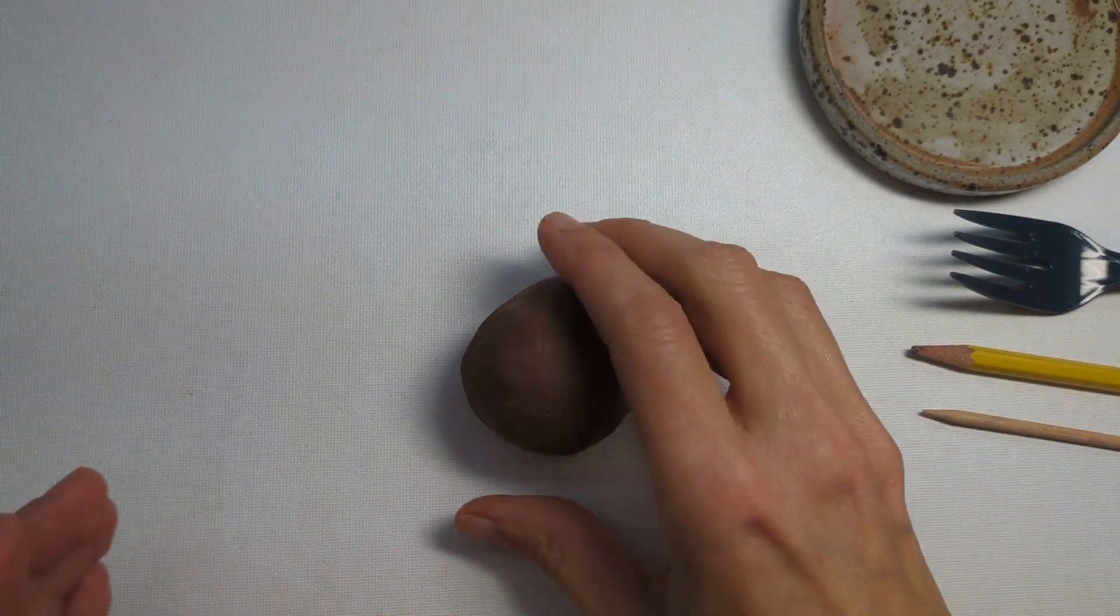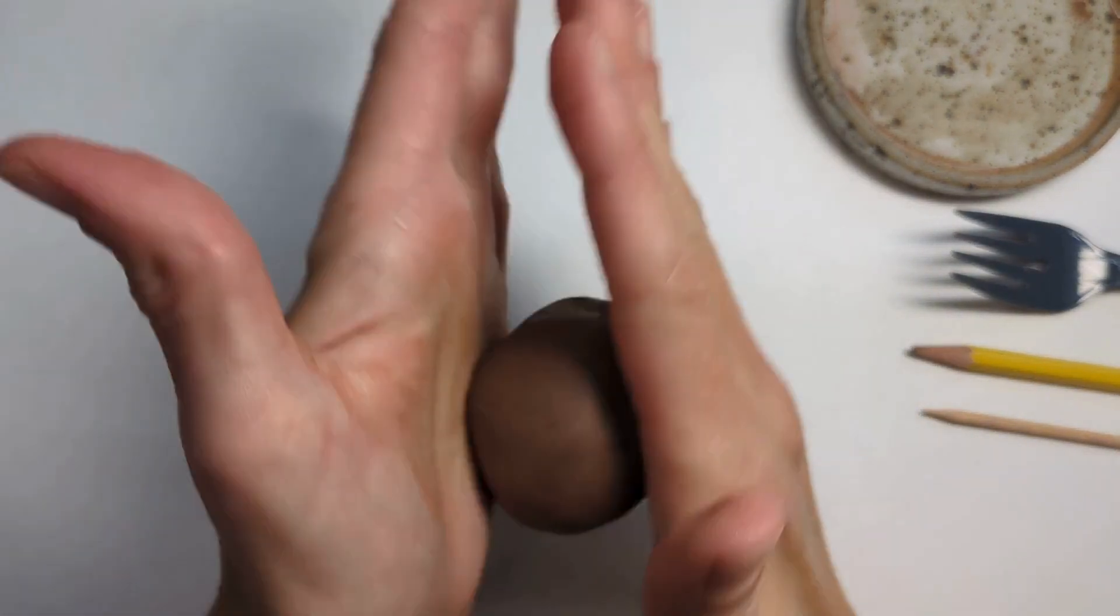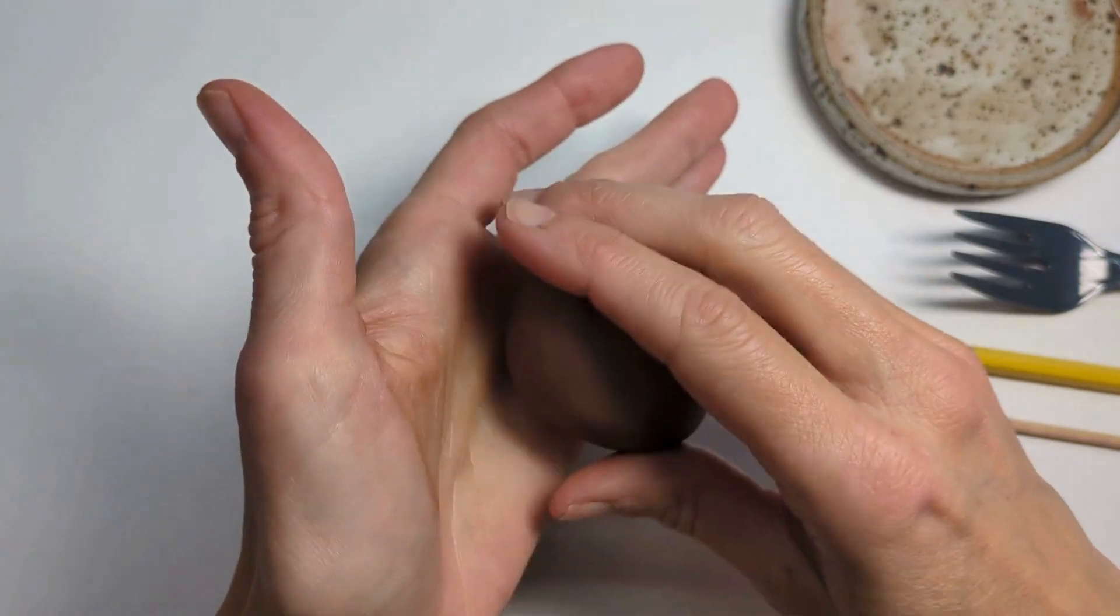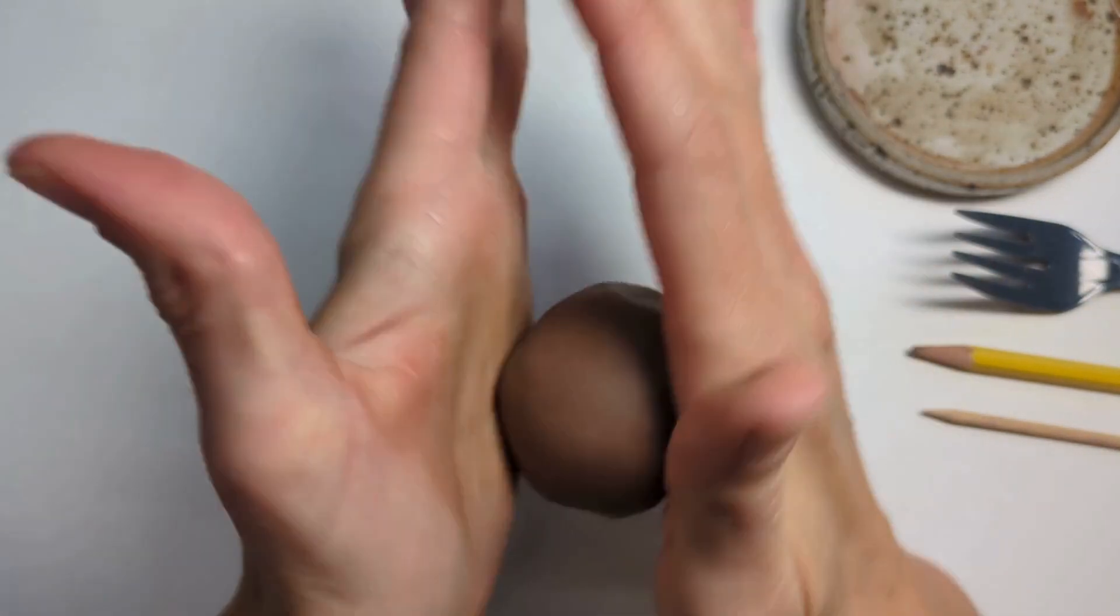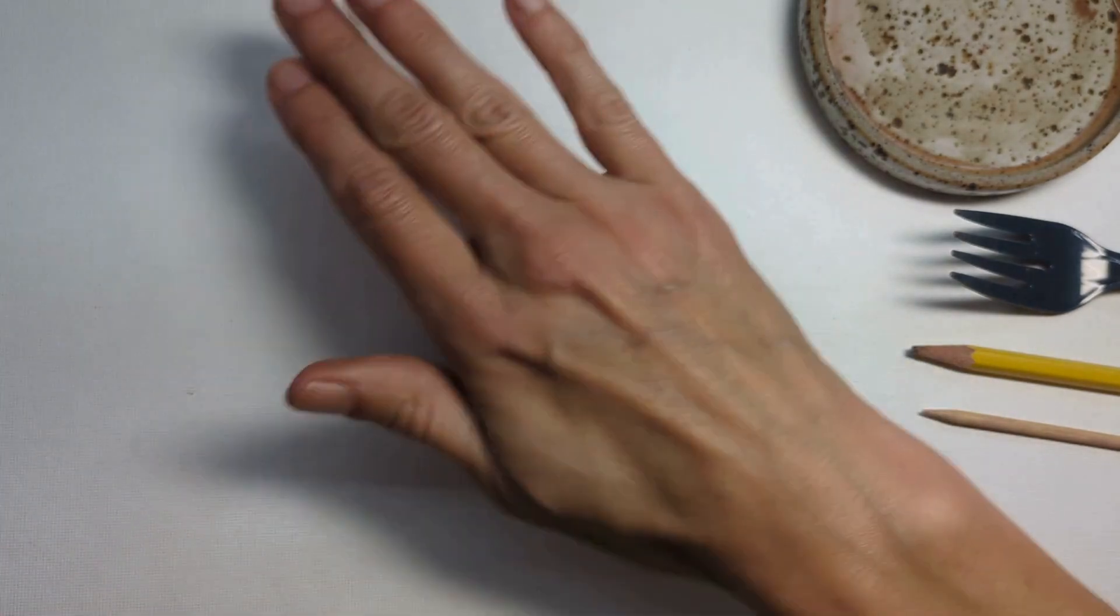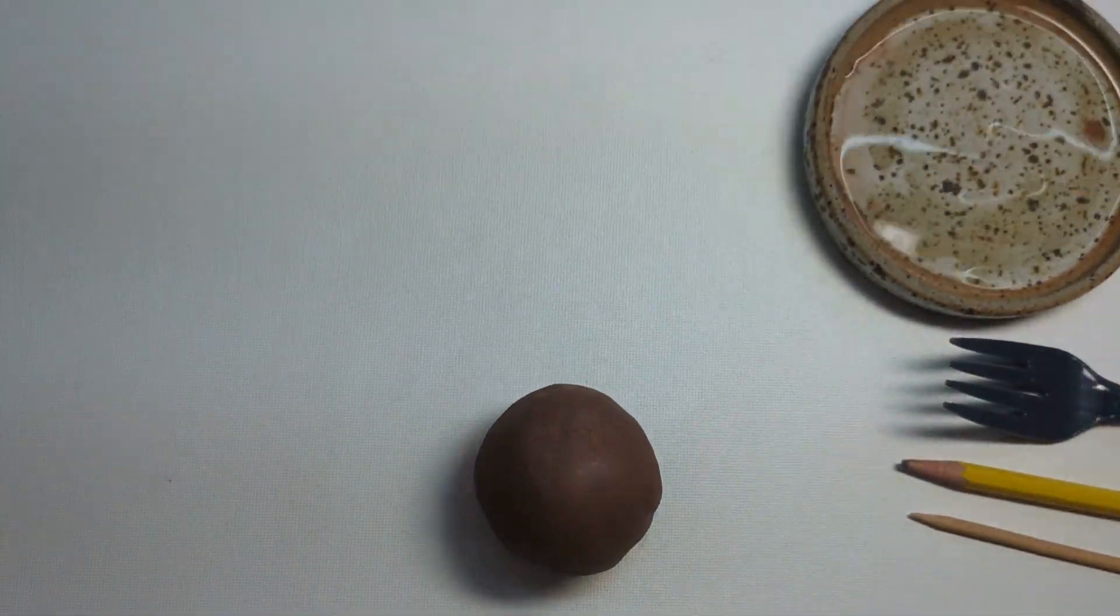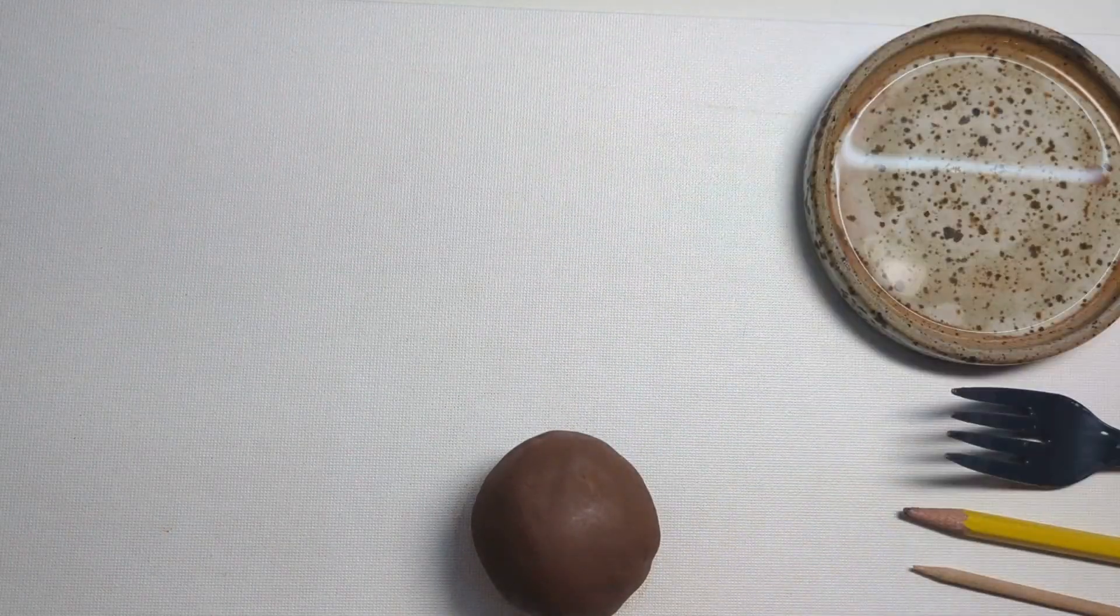Alright, we're going to make a pinch pot today. This is a great lesson to do with kindergarten or people that are just starting out with working with clay. First, I'm going to roll the ball in between my hands or on the surface of my board. I'm using a canvas board that I would paint on so that my clay does not stick to my table.